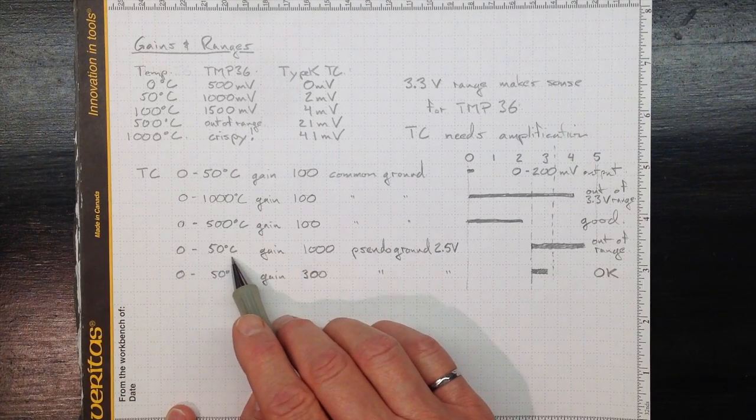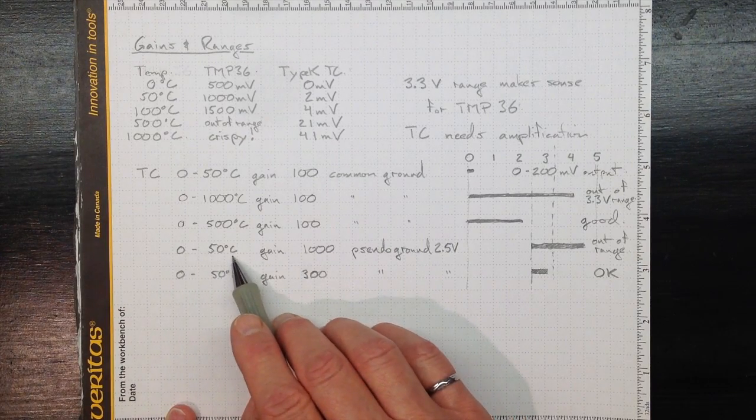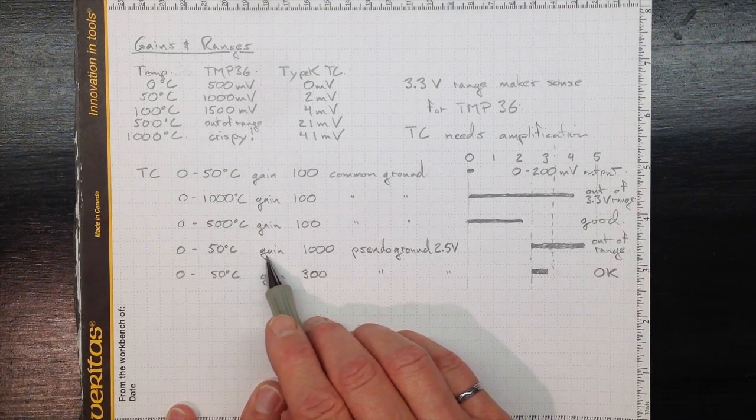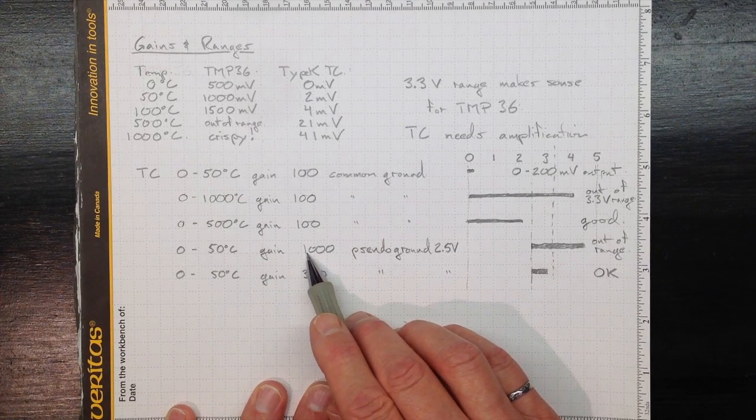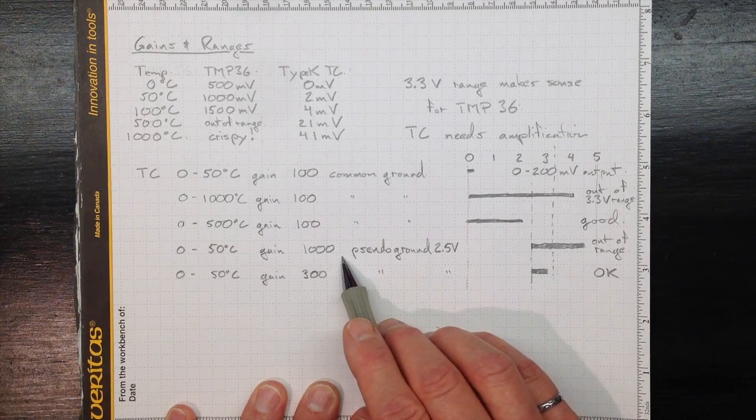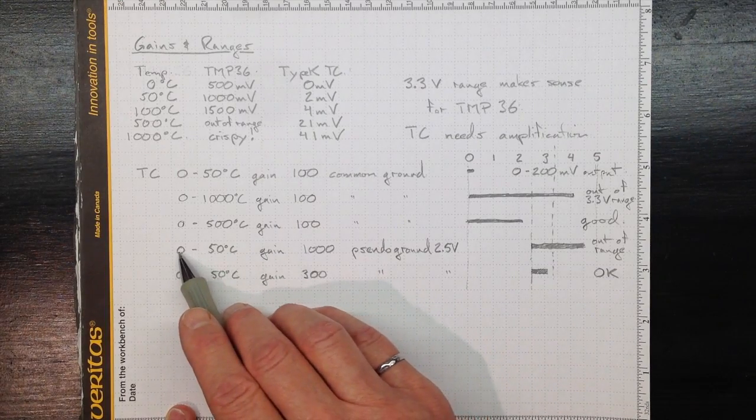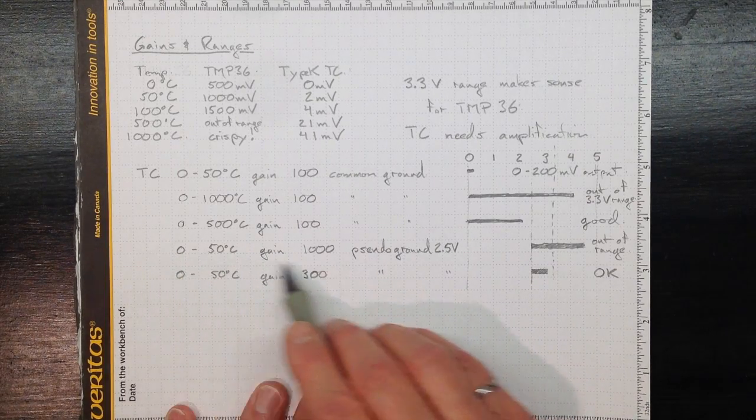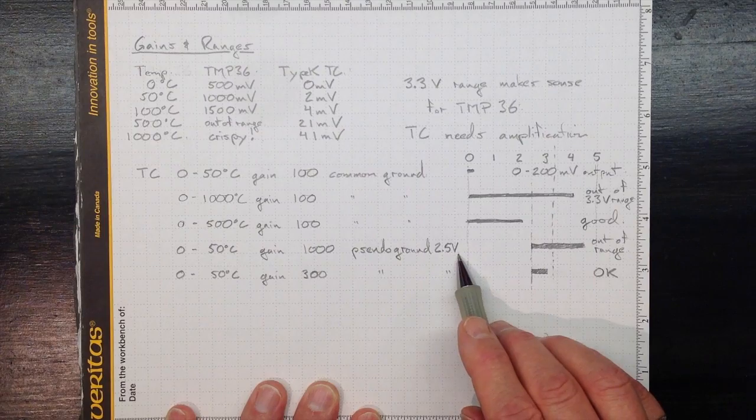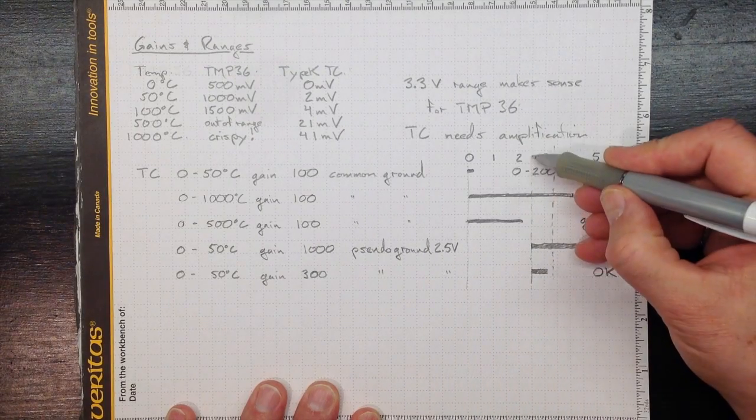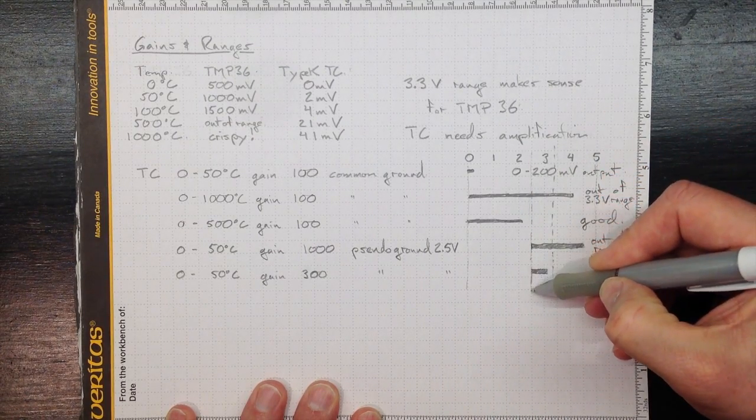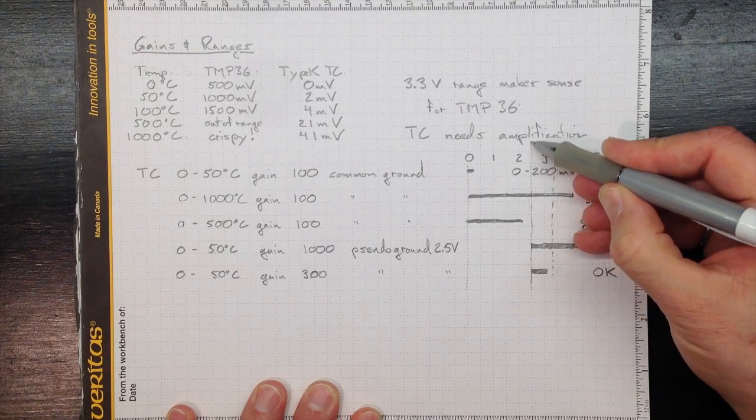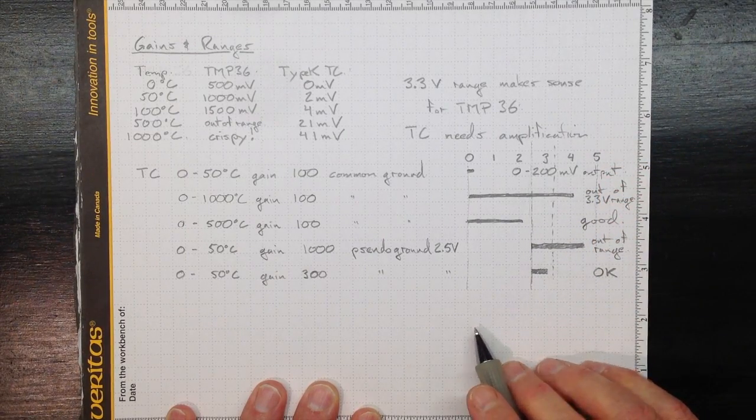If we're only interested in low temperatures, down near room temperatures, zero to fifty degrees Celsius, we might want a higher gain. Try a gain of a thousand. And if we're interested in the possibility that it might actually go negative, then we might use a pseudo ground amplifier to make our base value around 2.5 volts, somewhere in the middle of the range of voltages that we're working with.